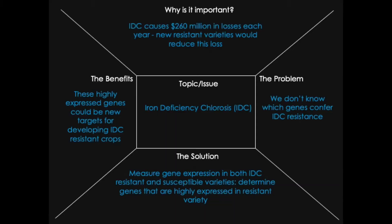So let's look at an example from my research. The topic or issue is iron deficiency chlorosis, or IDC, in soybean. Starting at the top — why is it important? IDC causes 260 million dollars in losses each year, and new resistant varieties would reduce this loss.